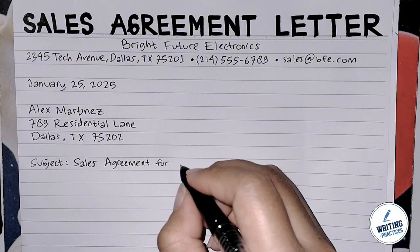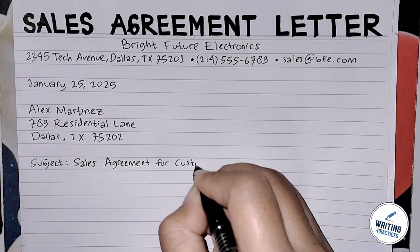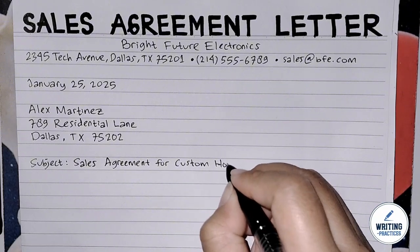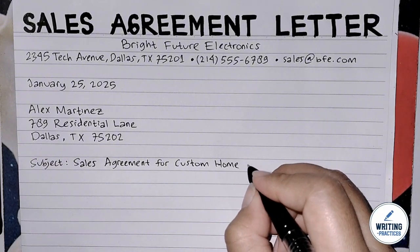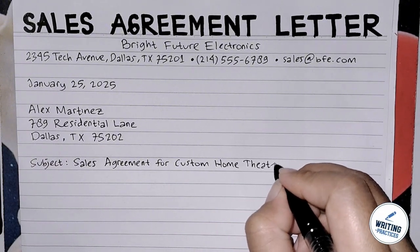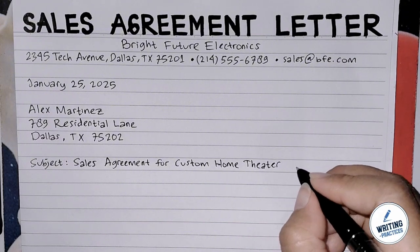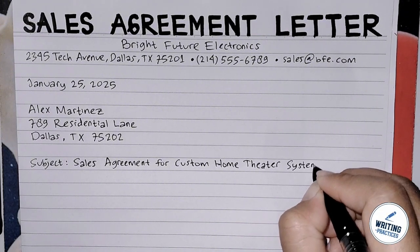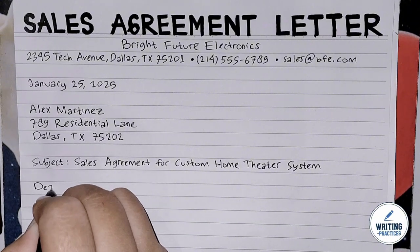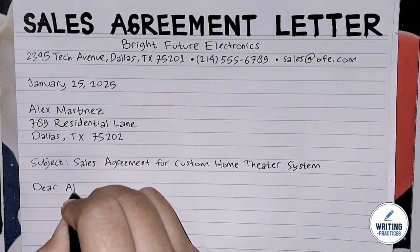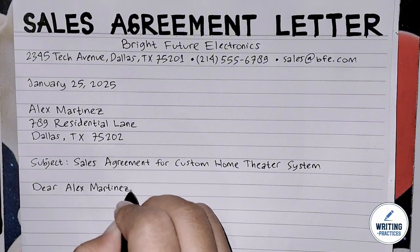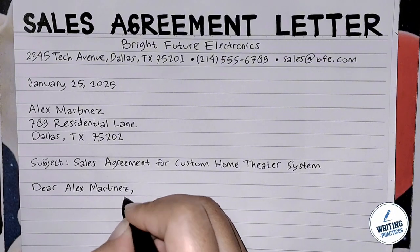Once you've done that, continue to write the subject line, which summarizes the nature of the letter and the agreement being formed. The subject line gives a clear indication of the document's content, allowing the recipient to understand the primary focus immediately. After completing all this information, open the letter with a formal salutation — simply write 'Dear' followed by the name of the recipient.